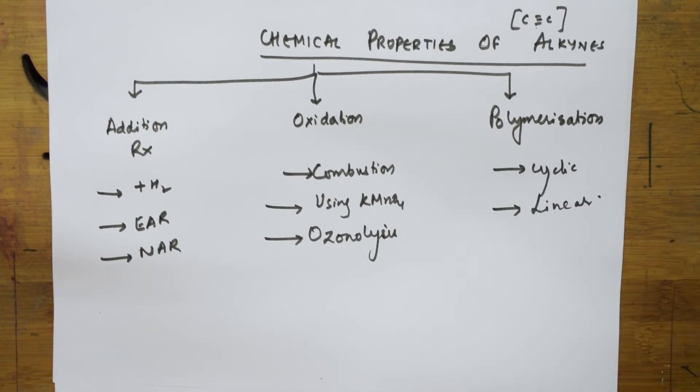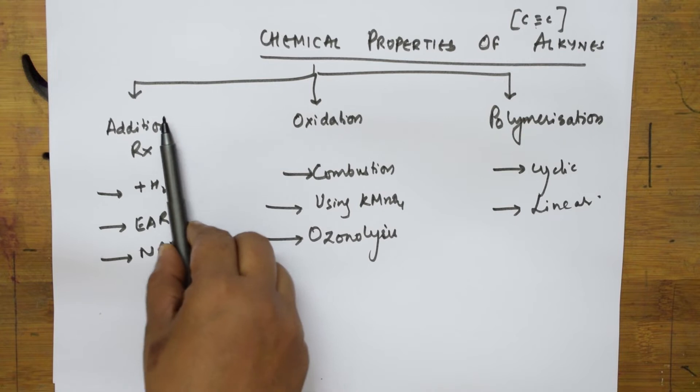Under polymerization, I am going to teach you about cyclic polymerization and linear polymerization, both we are going to see. With this basic information, let us start learning all the chemical properties. I will be starting with the first class of reactions, that is addition reactions.